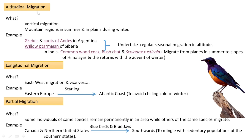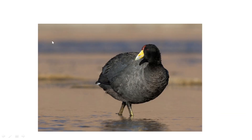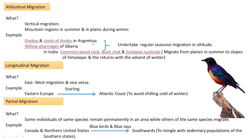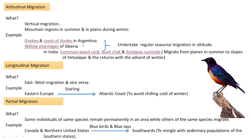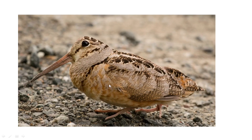Examples of birds showing altitudinal migration are greps, birds of the Andes, and the willow ptarmigan of Siberia. In India, birds such as the common woodcock also do altitudinal migration.